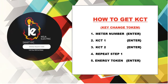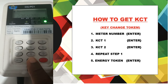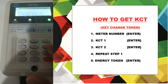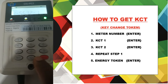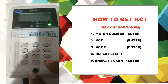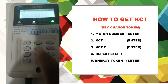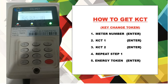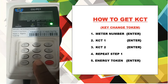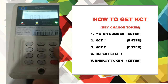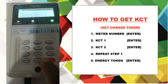Step one: punch in your meter number on the KCT unit. Step two: make sure there is a connection between your customer interface unit and your prepaid meter — there must be proper communication. Once you punch in your meter number and press Enter, it will say 'Successful.' If it says 'Fail,' there's no connection. Once it says 'Successful,' move to the next step.